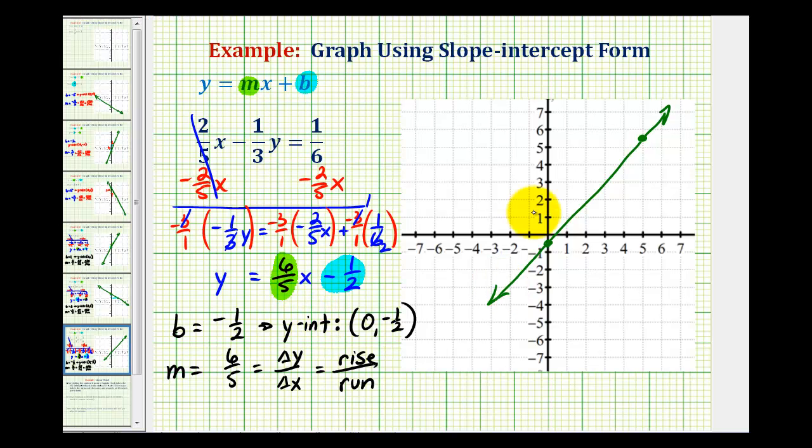So just to review, we had a y-intercept of negative one-half, because in slope-intercept form, we had minus one-half right here. And then since the slope was six-fifths, we went up six units from the y-intercept, and then right five units. And that's it for this example.